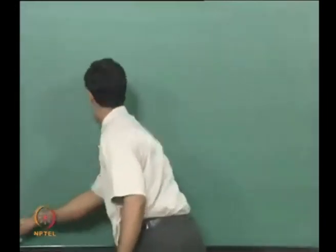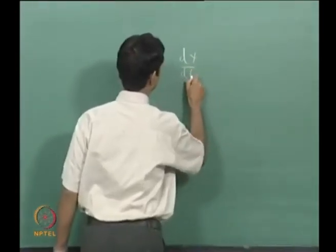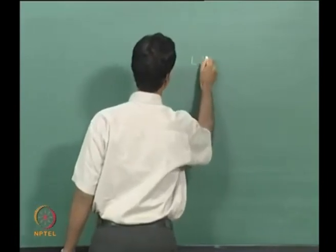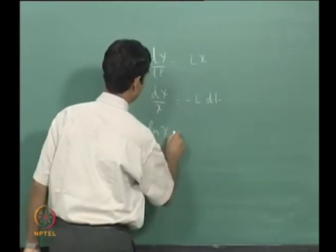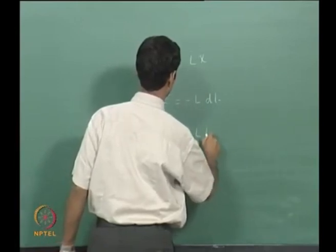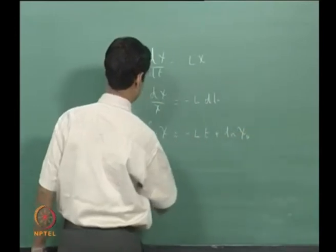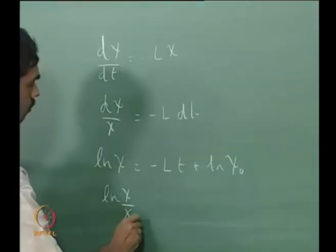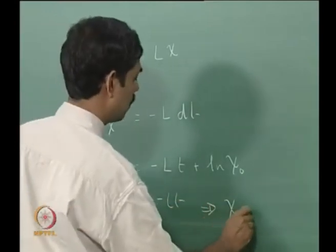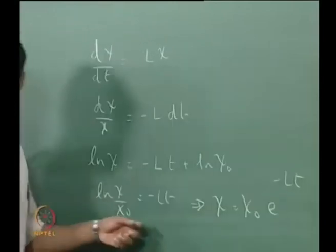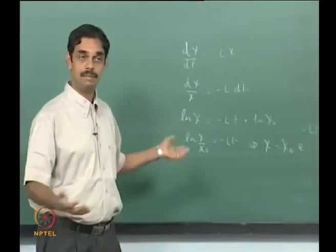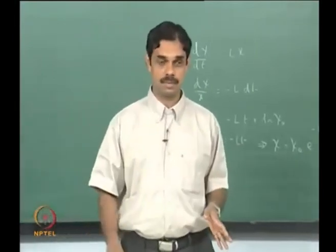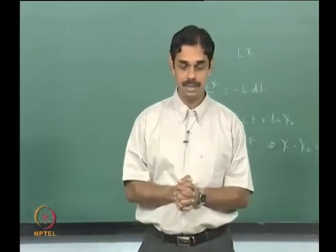If chi was just a scalar you can integrate it the way you integrate a number. But you can do the same with a matrix. We saw the meaning of matrix exponential and how to calculate it yesterday. So now we say chi of t equals e to the power minus Lt times chi-naught, and we need the norm of this e to the power minus Lt.